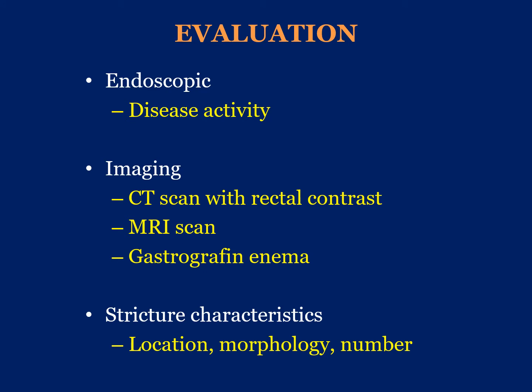I evaluate the patient with colonoscopy to assess for disease activity, especially for patients with inflammatory bowel disease. CT scan with rectal contrast is a great modality to study these patients. An alternative is MRI scan of the abdomen and pelvis. Gastrographin enema is probably the most widely available diagnostic imaging test at most institutions. We look at the characteristic of the stricture in terms of location, morphology, diameter, length, and number of strictures — whether single or multiple.